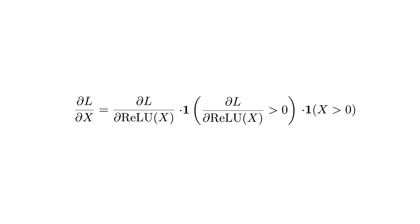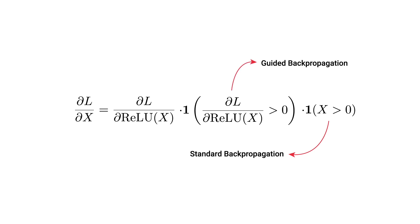To summarize: guided backpropagation works by adjusting the RELU activation functions of convolutional neural networks so that all negative gradients passed during backwards propagation will be set to zero. These layers will now suppress gradients in two ways — those where the input is negative, and those where the gradients are negative. Now let's try to understand why this trick works so well.